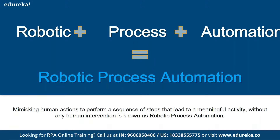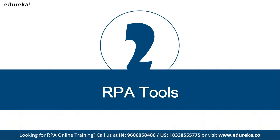Don't think that every work can be done by RPA. No — it can only do sequential steps. If a task requires some human intelligence in between — if the human brain is required to complete the task — it cannot perform that. It should be done in a sequential manner. That is said to be robotic process automation.